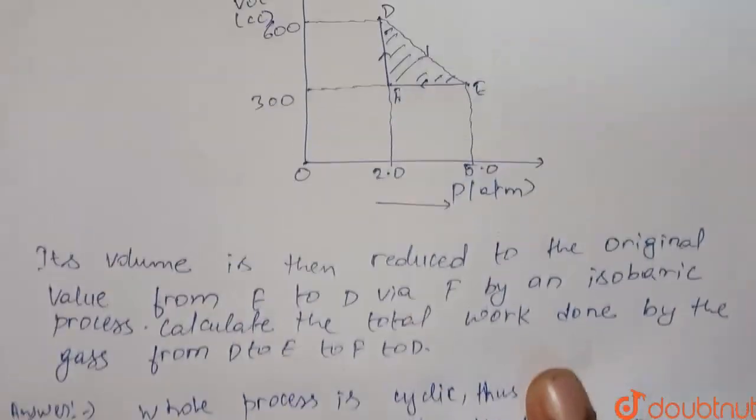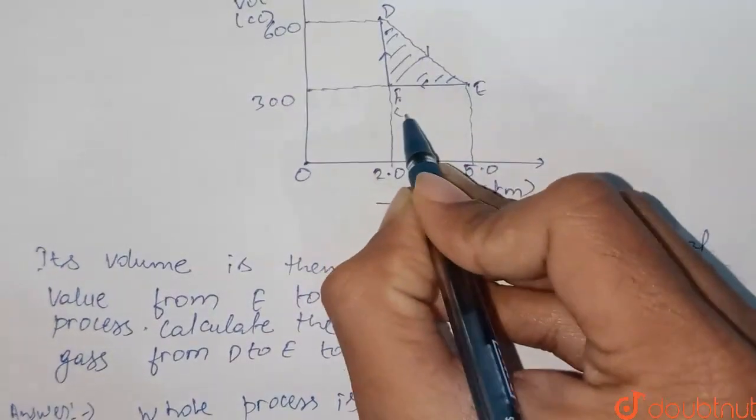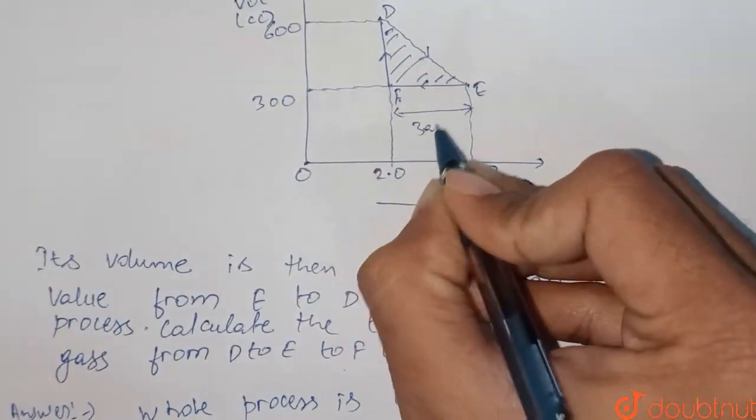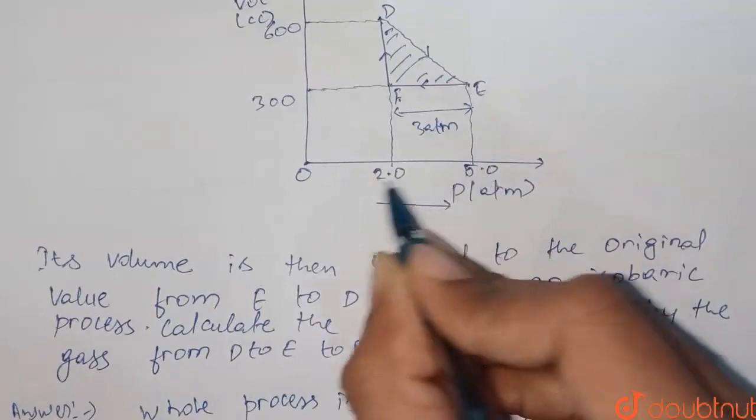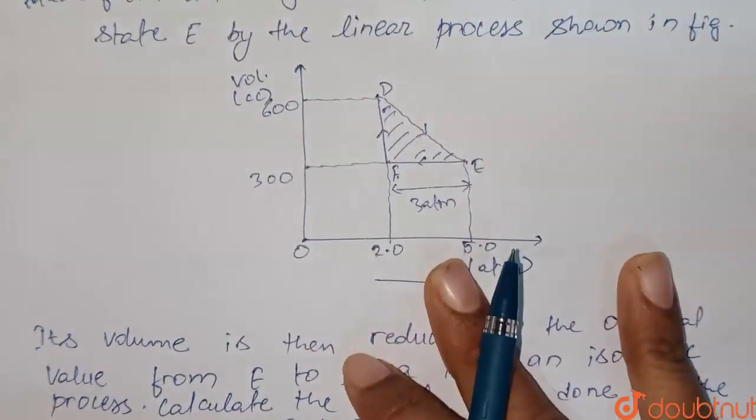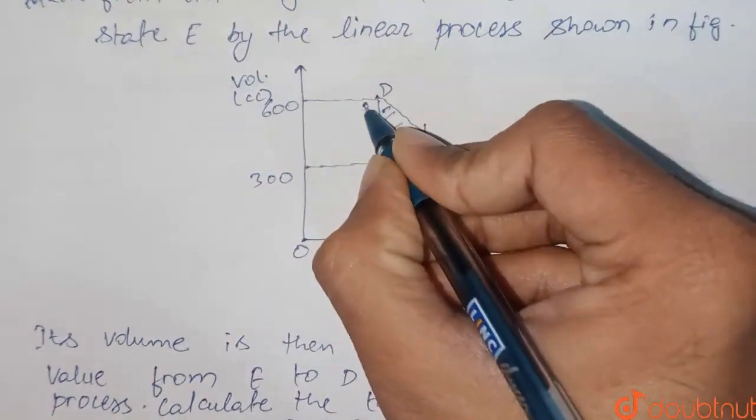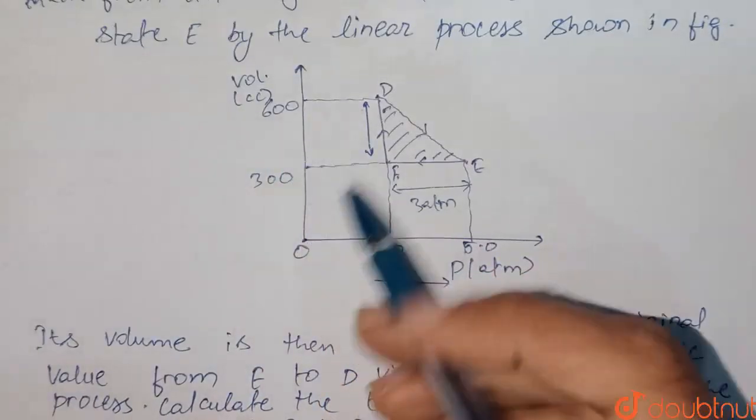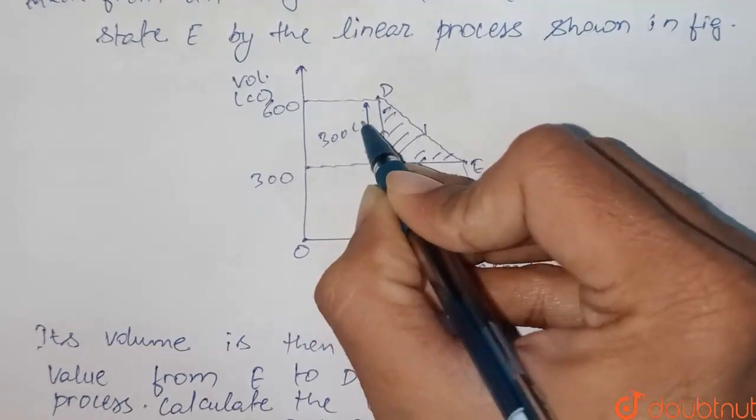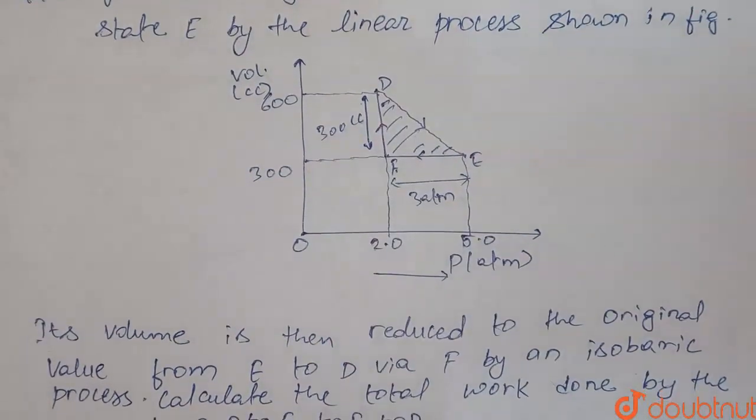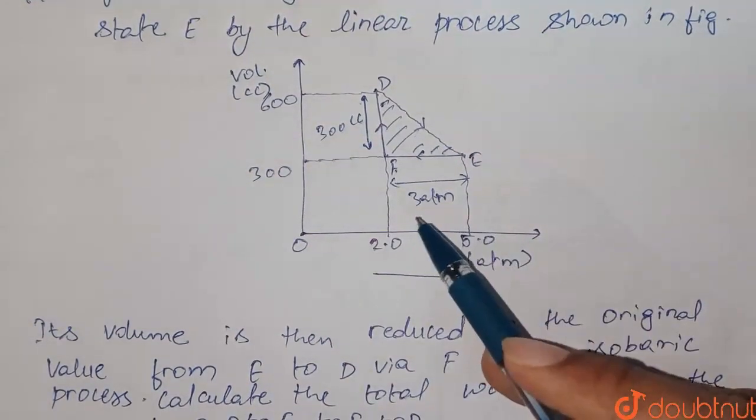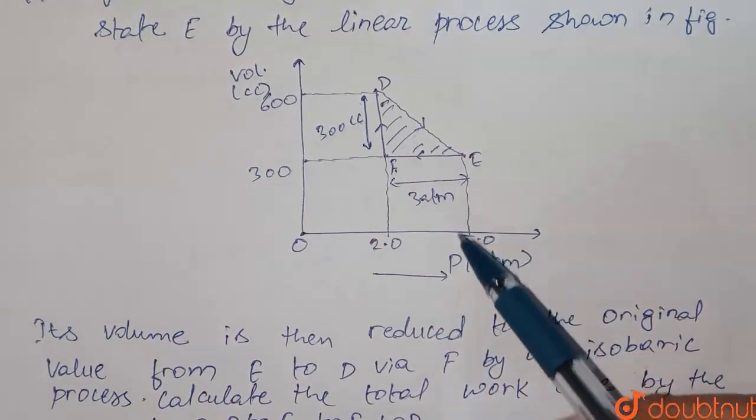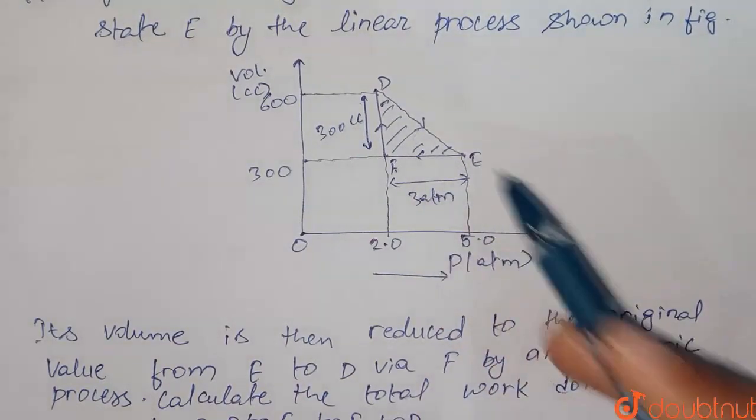For the base part, we'll have P1 minus P2, that is this length will be 3 atm, as 5 atm minus 2 atm will be 3 atm. This height part will be 600 cubic centimeter minus 300 cubic centimeter, and that will be 300 cubic centimeter. But the issue is that both of these are not in their SI unit, so first of all we should convert them to SI unit.